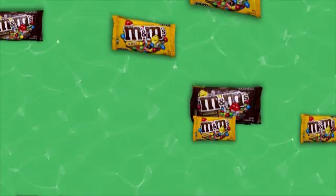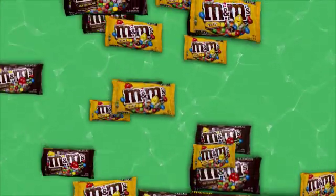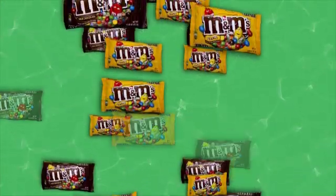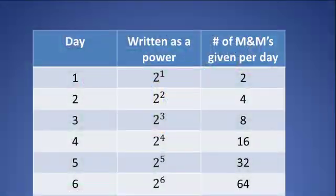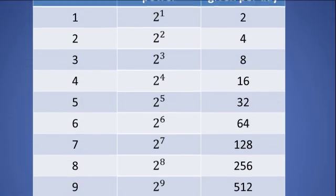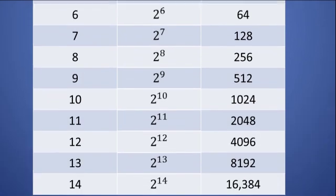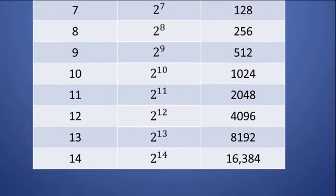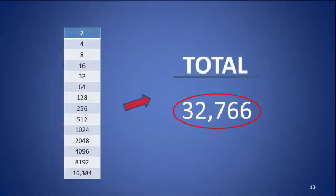To know how many M&Ms you have received in all, you need to add the number of M&Ms given to you on each day. The sum of the numbers in the third column is how many you will have in two weeks. Their total is 32,766 — that's way more than a regular bag.